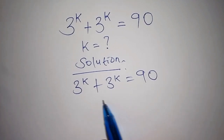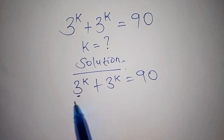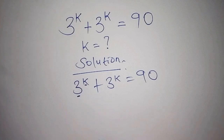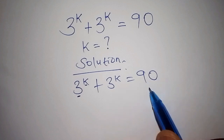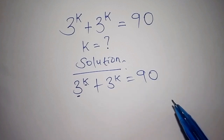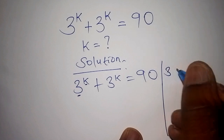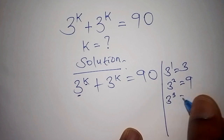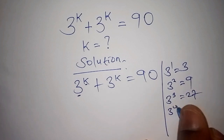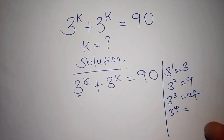As you can see, in this problem 3 is the base and k is the index number. It is not possible for us to convert 90 into an index number, simply because with base 3 we cannot arrive at 90. For example, 3 to the power of 1 is 3, 3² is 9, 3³ is 27, and 3⁴ goes past 27 — so we cannot express 90 as a power of 3.